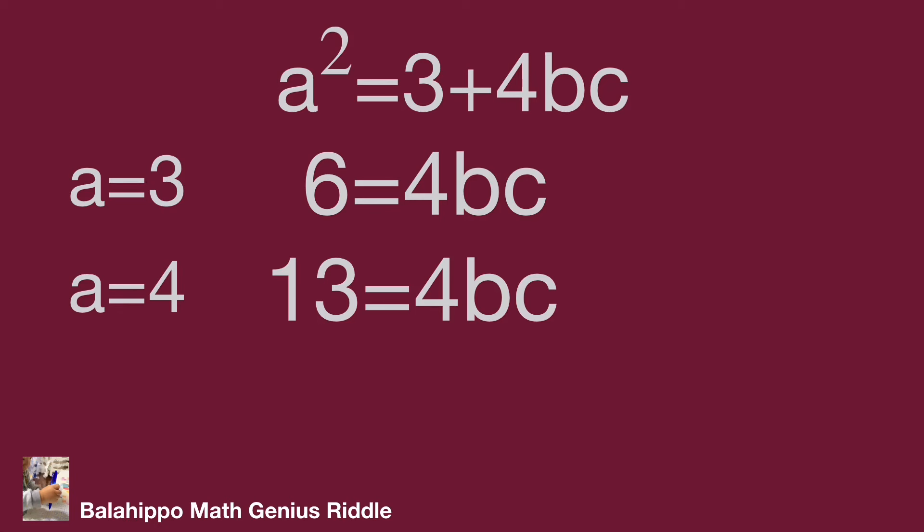And for a equals 5: 5 squared equals 3 plus 4bc. 5 squared equals 25. Finally, we get 22 equals 4bc. All these results cannot be satisfied by 4bc. So I'm going to substitute through this finding.